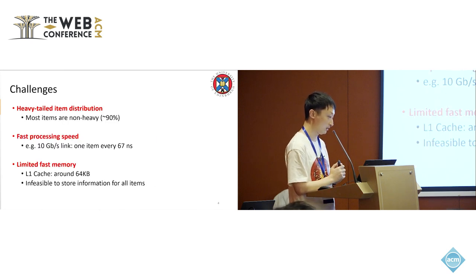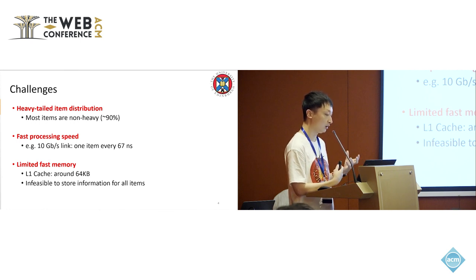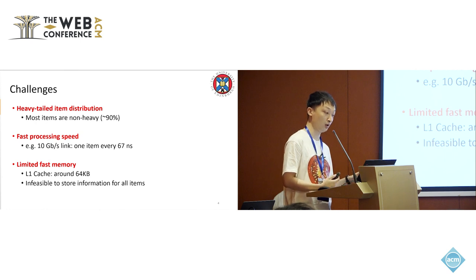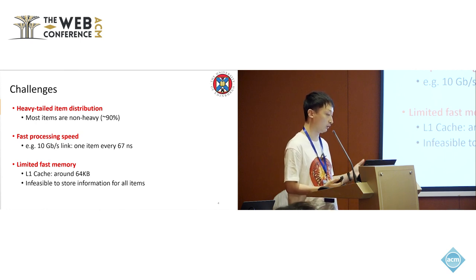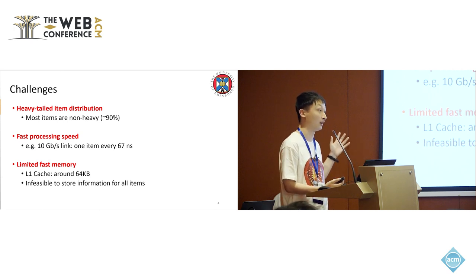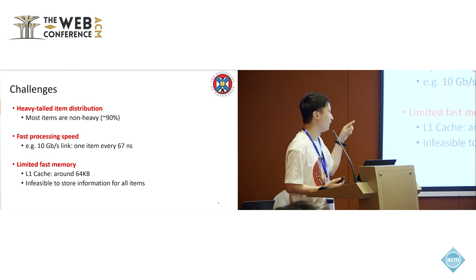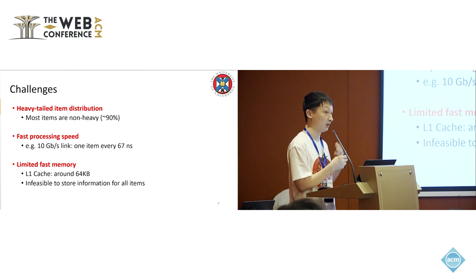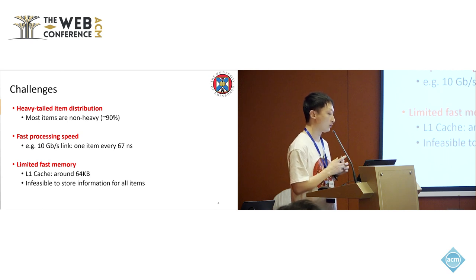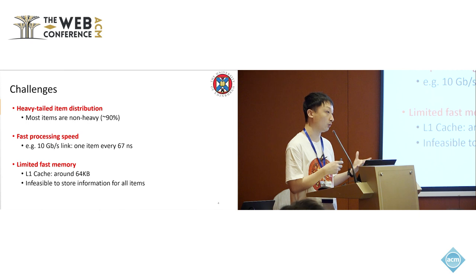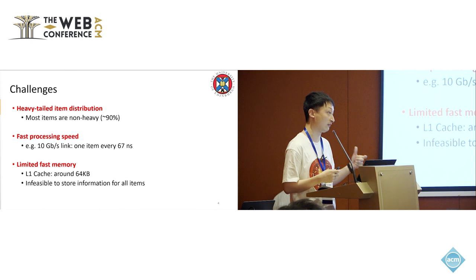But detecting these items is non-trivial. The first reason is that item distribution is highly skewed — most items are not heavy, around 90 percent based on previous research. Also, we need to process items at very fast speed; for a 10 gigabytes per second link, we need to process every item in 67 nanoseconds. Given such fast speed and large volume, it's impractical to track information of all items. In the physical machine, the CPU's L1 cache is only around 64 kilobytes.